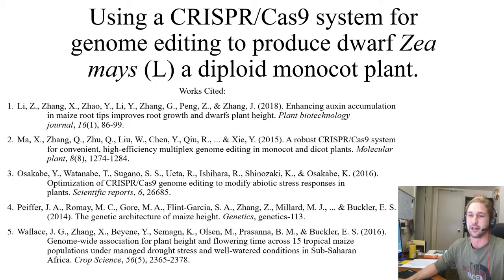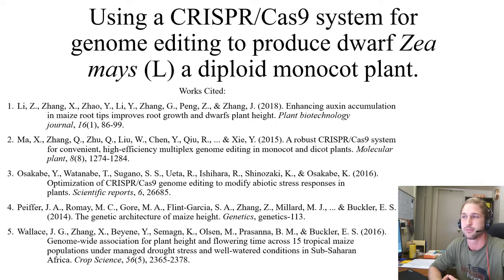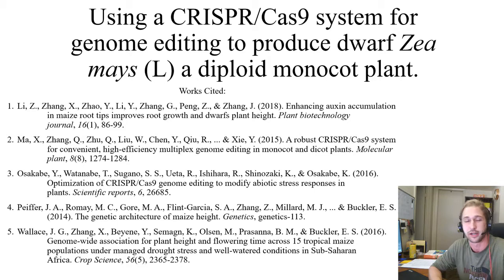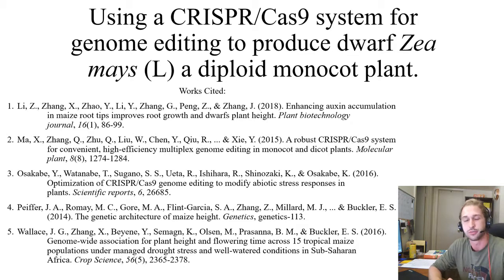Hello and welcome to Inquiry and Creativity. I'm Cameron Lin, a senior biologist here at MSU, and today I'm going to be presenting to you using a CRISPR-Cas9 system for genome editing to produce dwarf maize, a diploid monocot plant. This is a corn plant and I want to find out better agricultural methods for future production in our ever-changing climate.